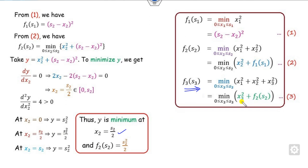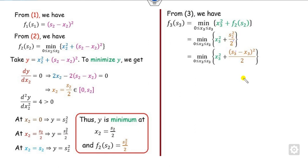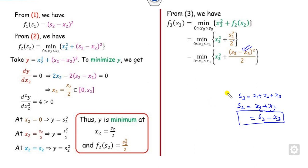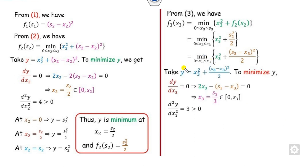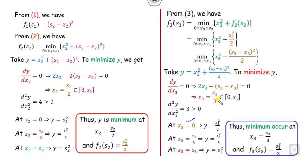Similarly, we can substitute the value of f(2, s2) into equation 3. We set s2 = s3 minus x3 and substitute into this expression. To minimize over the domain 0 to s3, take y, compute the first and second derivatives. The critical point is found, and it lies within the domain. Evaluating at boundary points 0 and s3, and at the critical point, the minimum is always 1/3 of the relevant term, so minimum occurs at the corresponding x3 value.